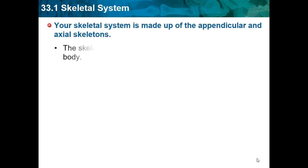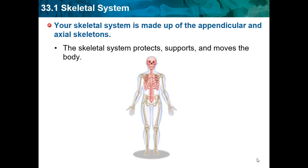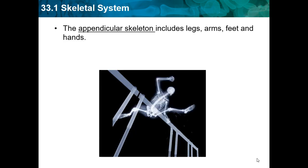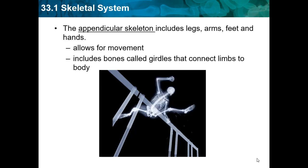Your skeletal system is made up of the appendicular and axial skeletons. The skeletal system protects, supports, and moves the body — those are its functions. The appendicular skeleton includes legs, arms, feet, and hands, and allows for movement.